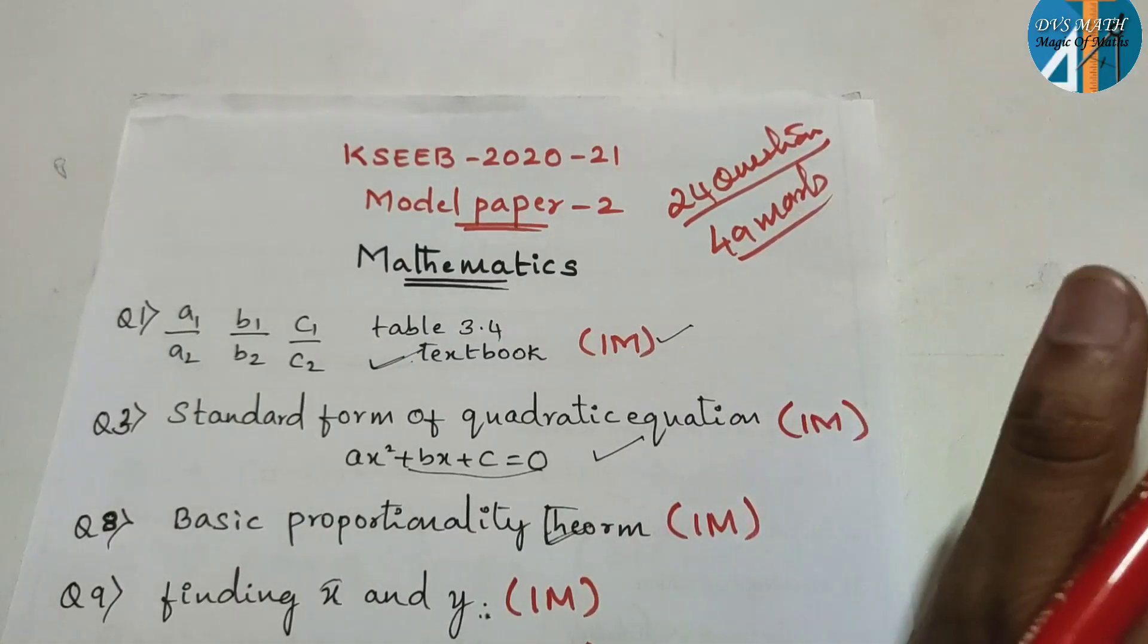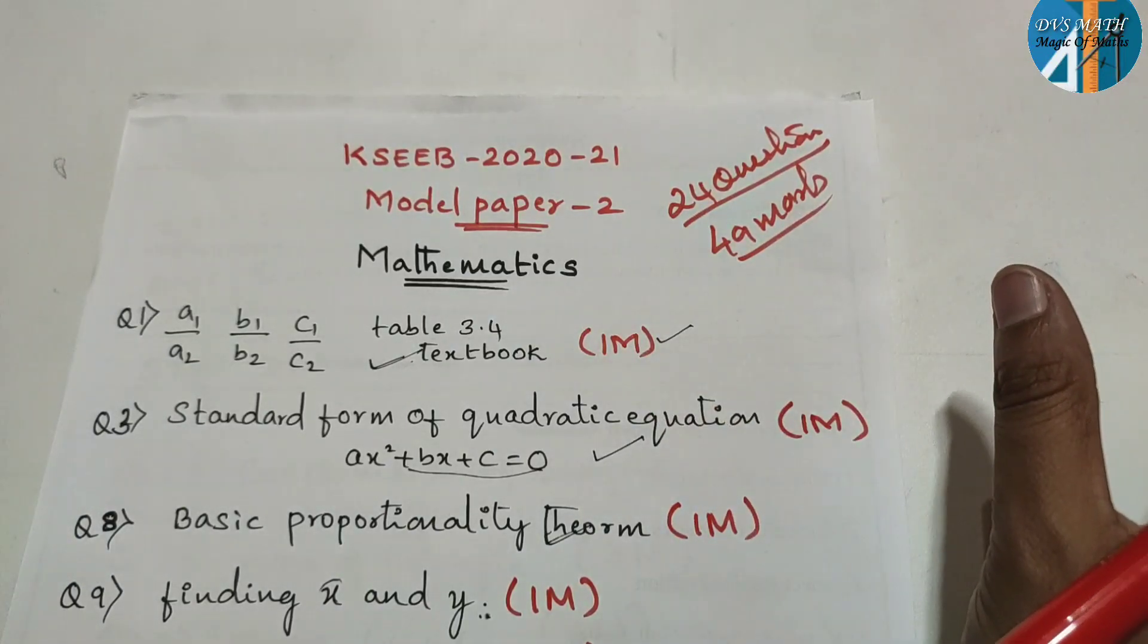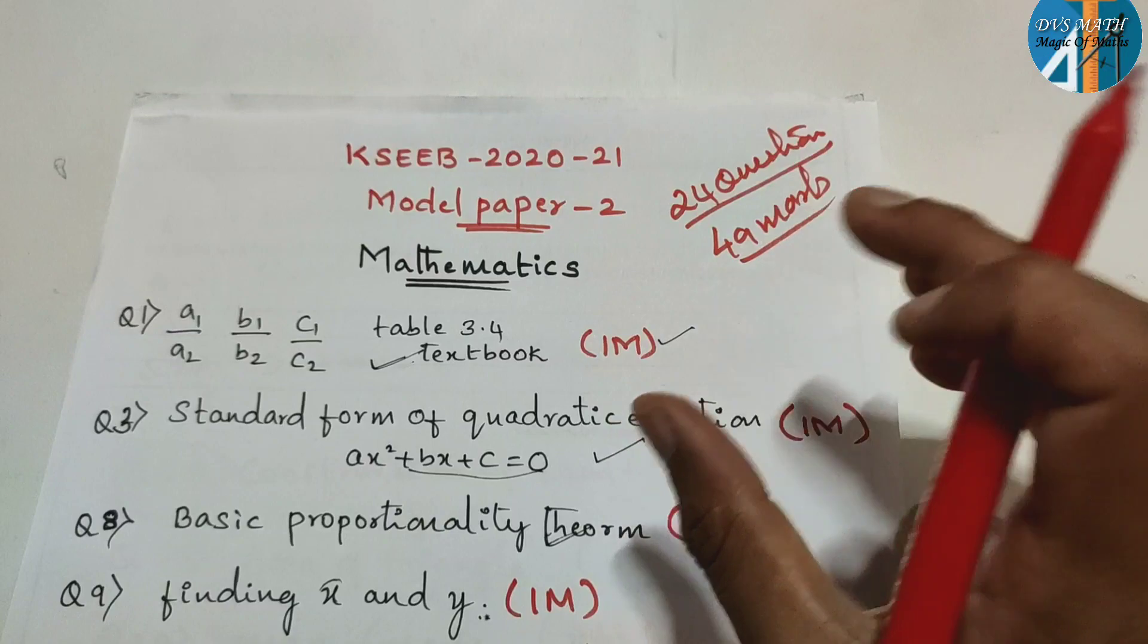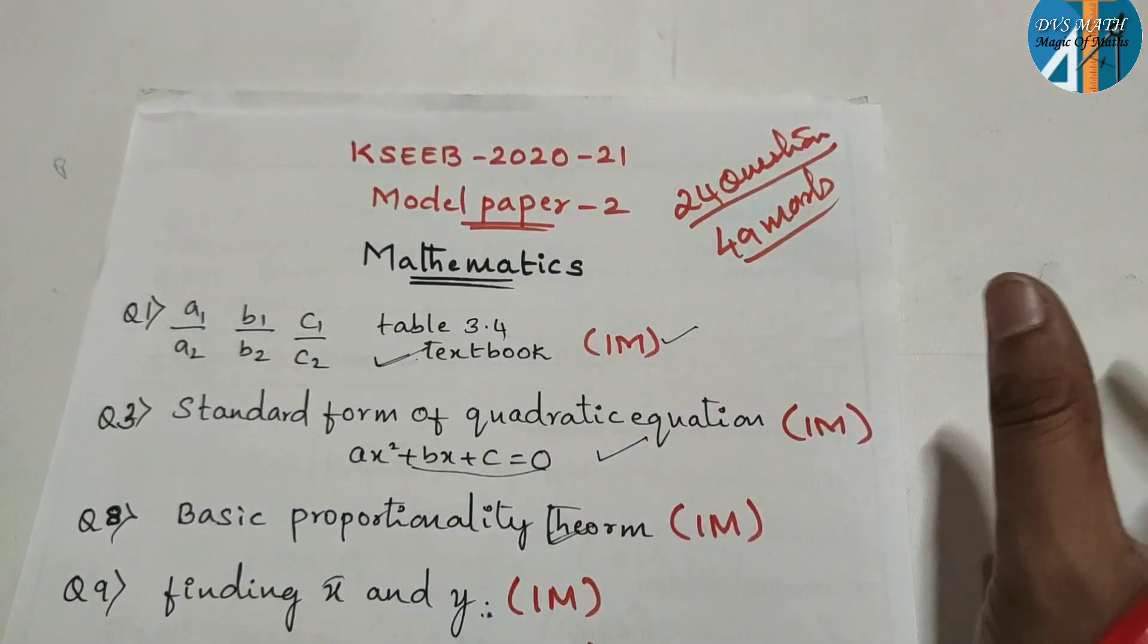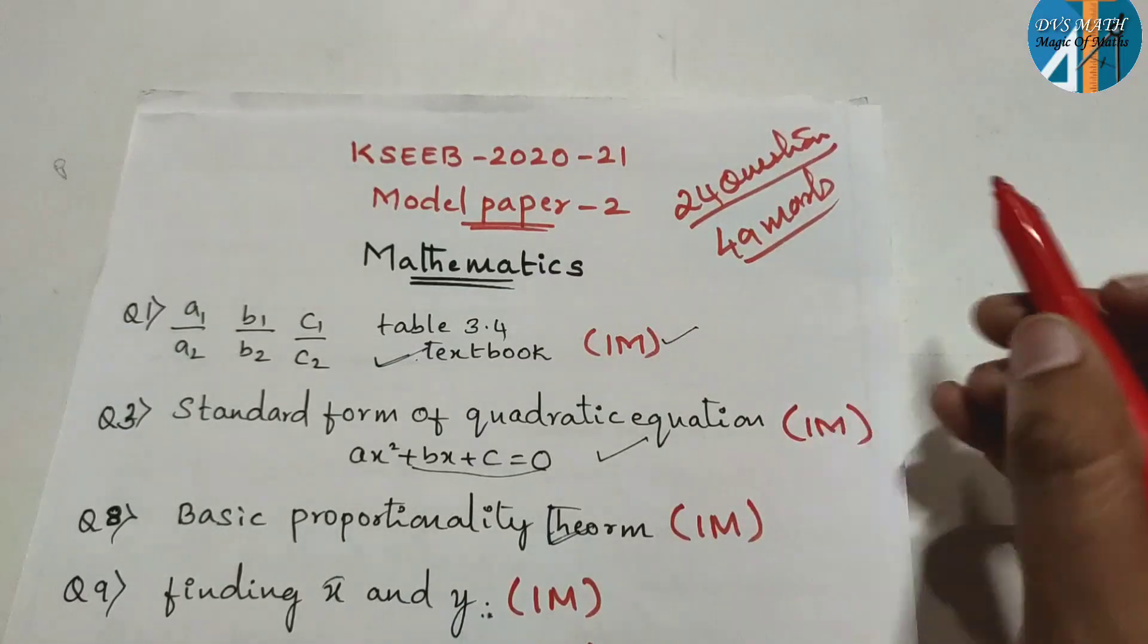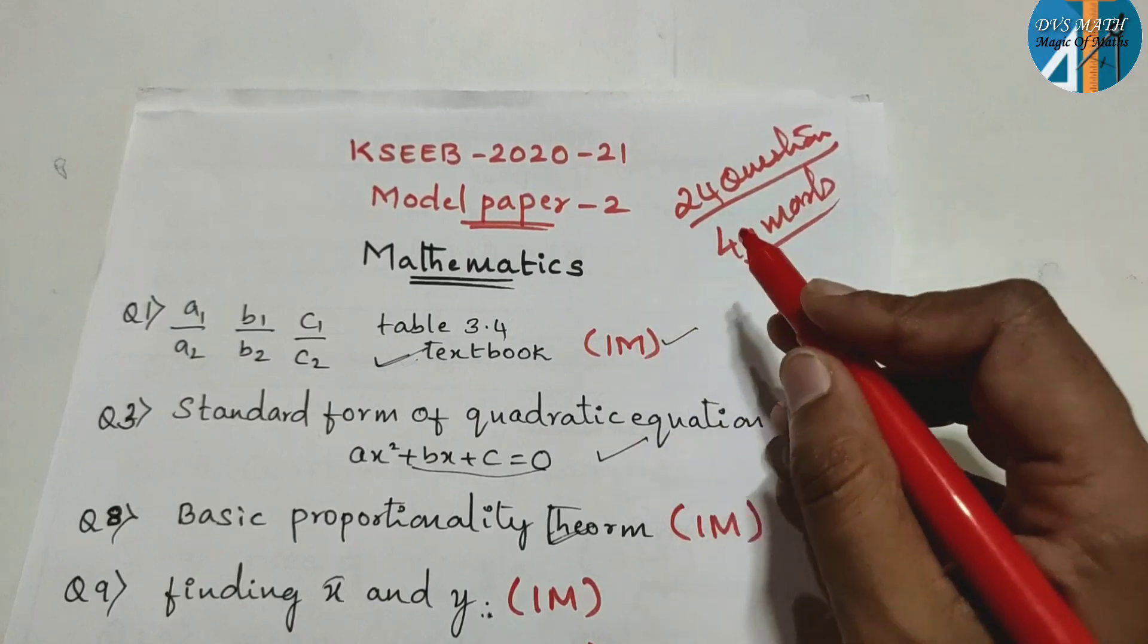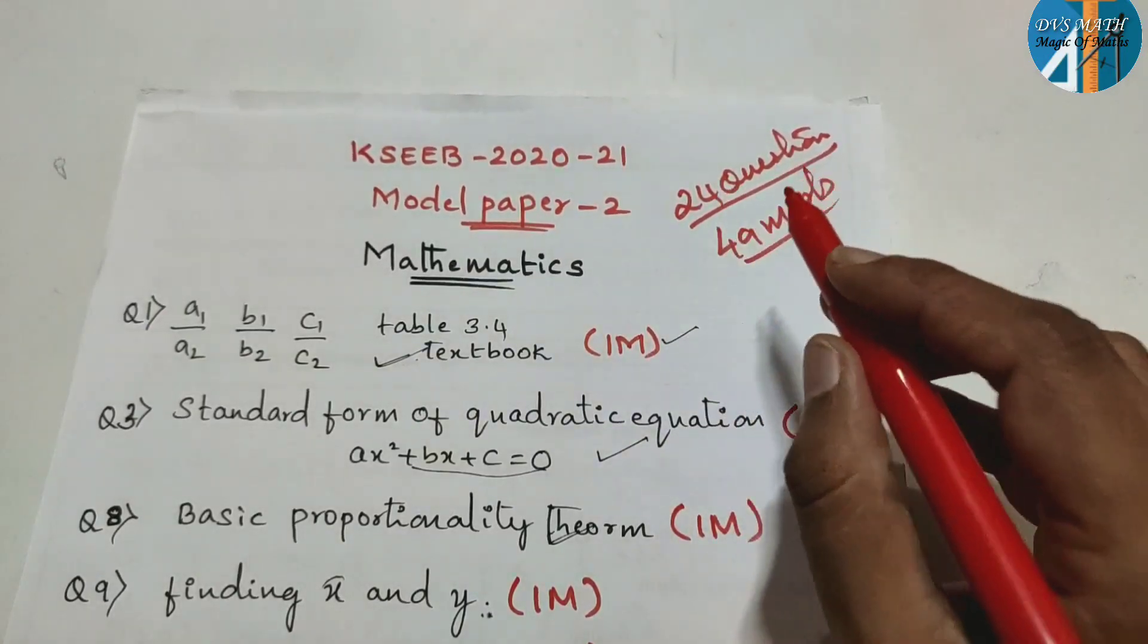In maths, the pattern will definitely not change. It says solve for x and y. The heading solve for x and y will be there. Solve graphically will be there. Construction of triangle will be there. Construction of triangle will be there. So different measurements or different numbers will be given, that's all. The pattern will not change like this.